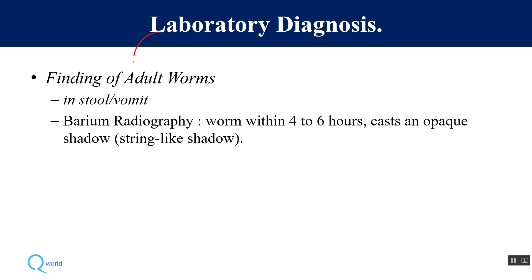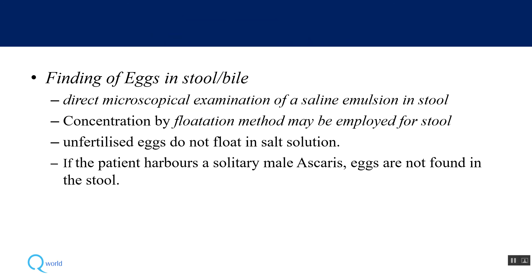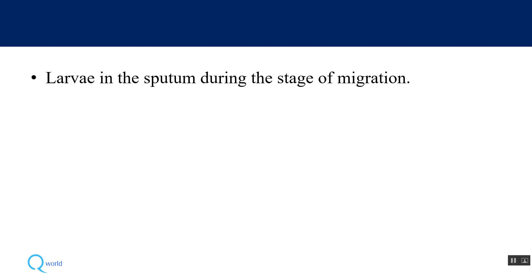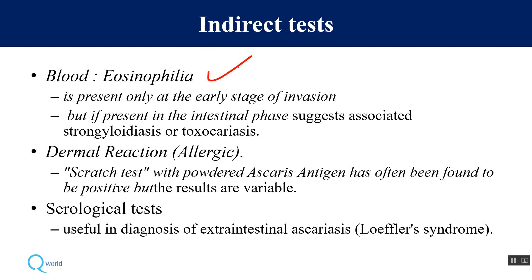Diagnosis: adult worms can be found in stool or vomit. Imaging with barium shows a string-like shadow. Eggs can be found in stool and bile using saline emulsion or direct microscopy with concentration or flotation techniques. Larvae in sputum can be found during lung migration. Indirect indicators include eosinophilia, especially during larval migration; scratch test using Ascaris antigen to show allergic reaction (variable results); and serological tests useful especially in the normal migration phase.